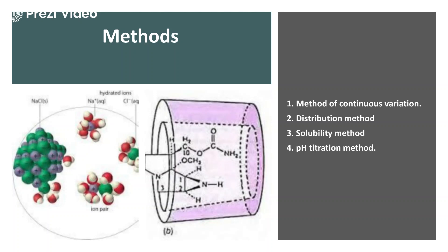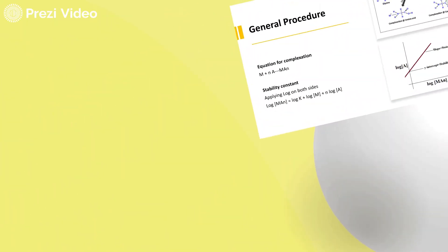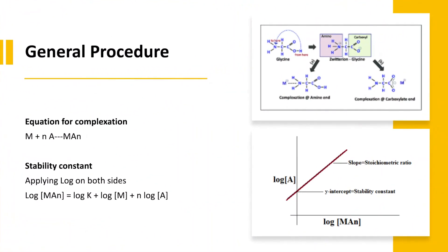As a general procedure for complexation, we have a ligand and a substrate which combine to form the complex. By applying the stability constants on both sides and by observing the change in physico-chemical properties, we can understand through the variation in stability constants whether the complex is formed or not.